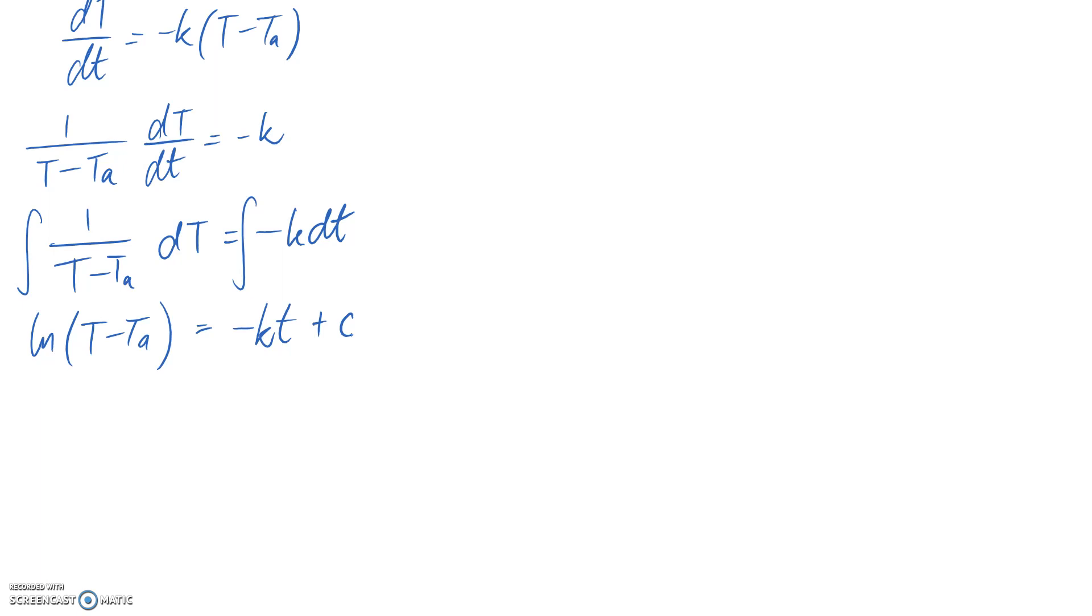Next step is to try and get big T on its own. Since it's tied up within a log, I can do e to the power of the log in order to get the canceling effect between the e and the log. However, I need to do the same thing to the other side to keep it equal.